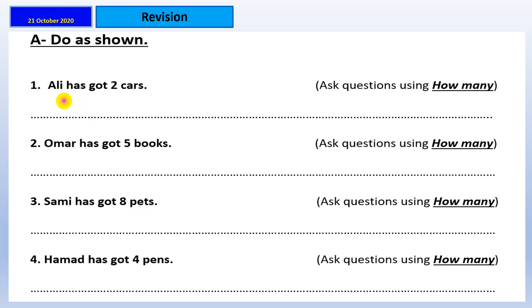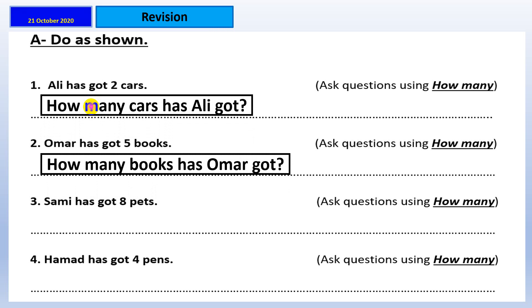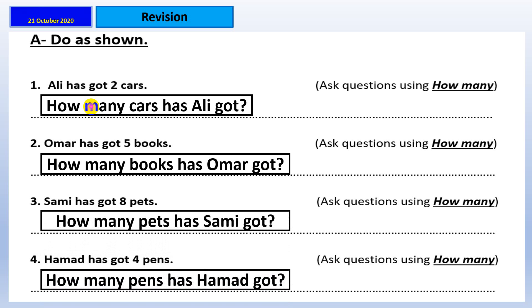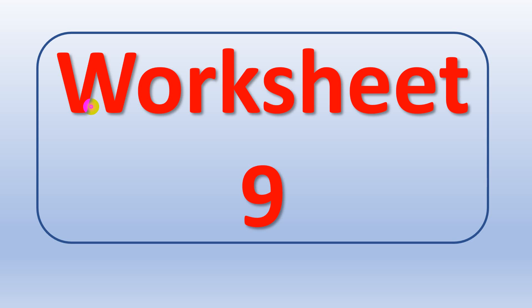Moving to worksheet number eight. Here, I'm going to ask a question, to form questions by using how many and apply it in the sentence to form a question. Pause the video now, answer it, then come back to see. Okay, now let's see. Ali has got two courses. I'm going to ask by using how many. How many courses has Ali got? Number two, Umar has got five books. I'm asking how many. I'm asking about the number of the books that he has got. So I'll use how many to ask about countable nouns. Sammy has got. How many pens has Sammy got? How many pens has Hamad got? Did you answer it like this? For sure, you are excellent.